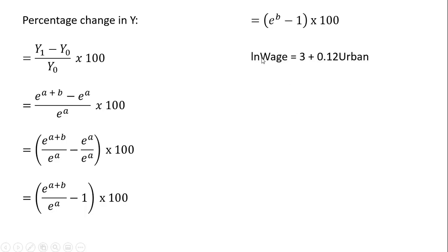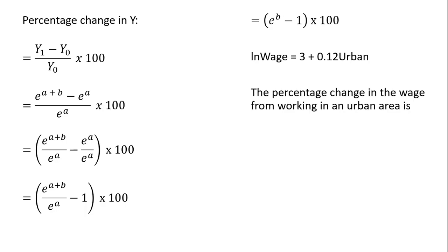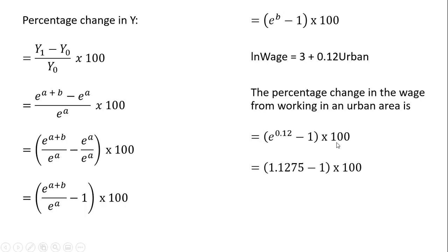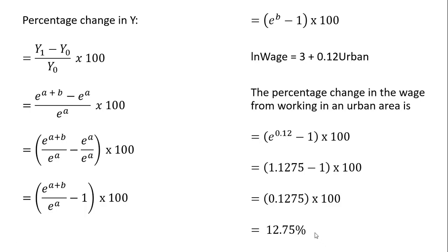Going back to our numerical example: the percentage change in the wage from working in an urban area — b is 0.12, e raised to 0.12 is 1.1275. Subtracting 1 and multiplying by 100, we get a 12.75% increase in the hourly wage. That's it — I hope you found this video helpful.